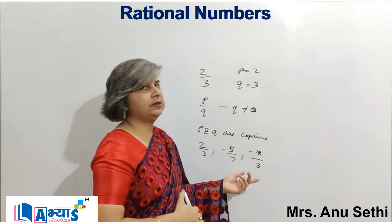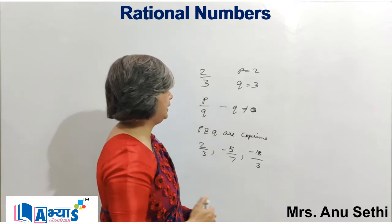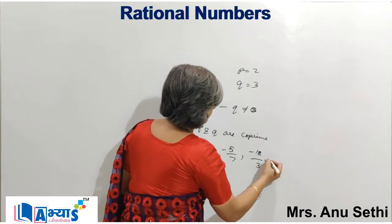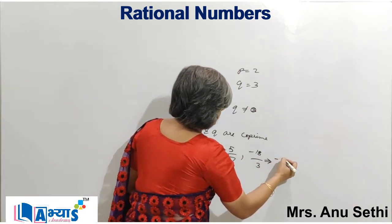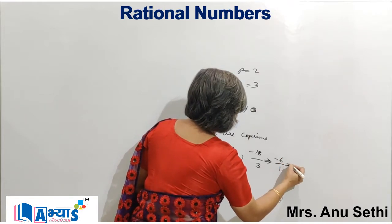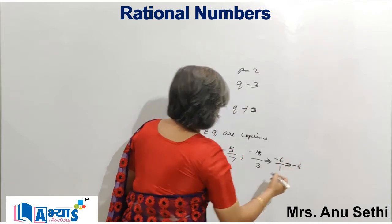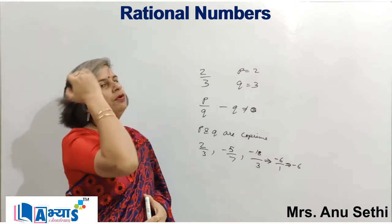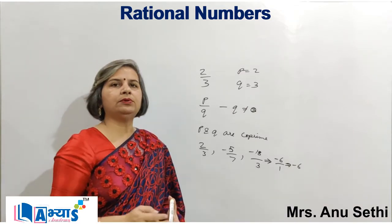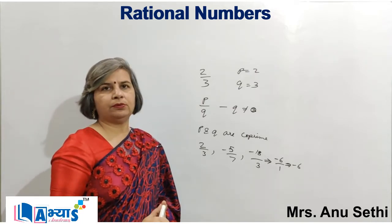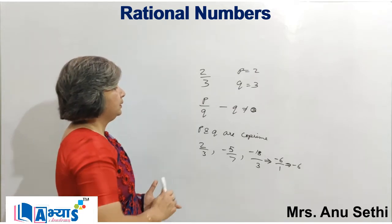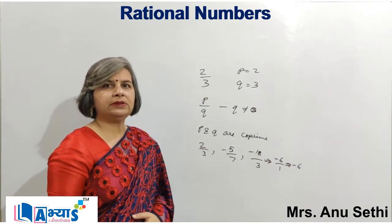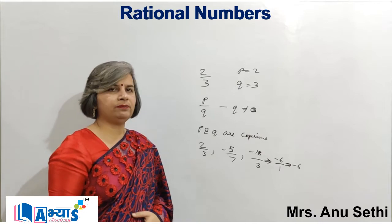But minus 18 by 3 is a rational number, however it is not in the simplest form because 18 and 3 have a common factor that is 3. So it can be further simplified to minus 6 by 1, which equals minus 6. So a rational number is a number which can be represented in the form of p by q, where p and q can be any integers but q cannot be 0. If p and q are co-prime, then the rational number is in the lowest or simplest form.